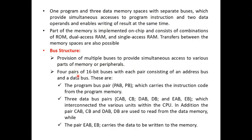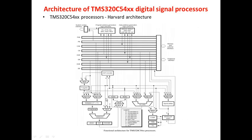There are 4 pairs of 16-bit buses, where each bus is 16 bits wide and consists of an address bus and a data bus. The letter 'A' combined with a prefix represents the address bus, and just the letter represents the data bus. The program bus pair PAB and PB carries the instruction code from the program memory.